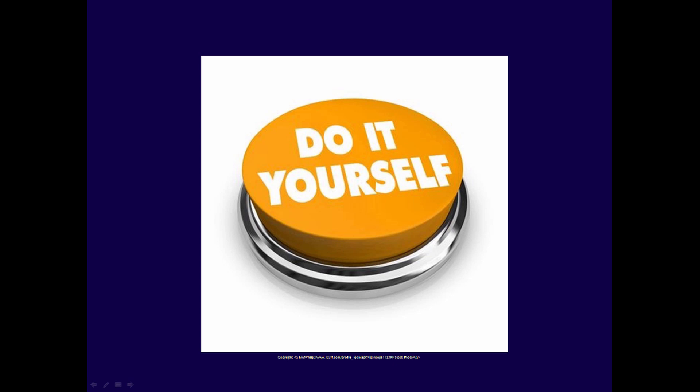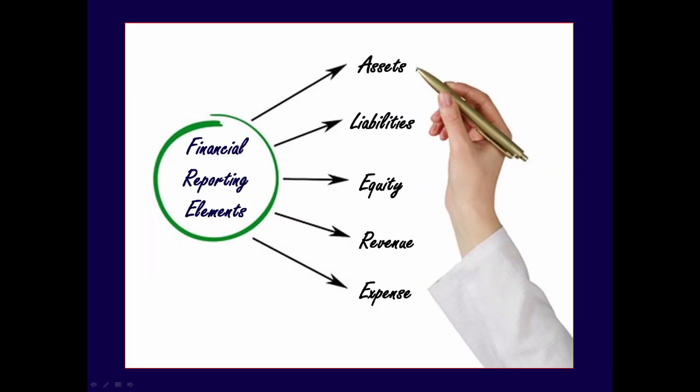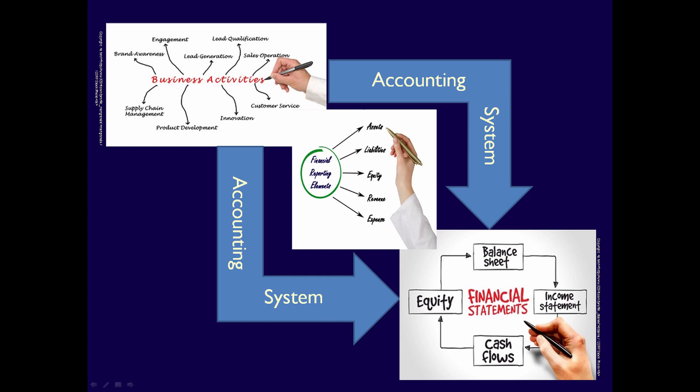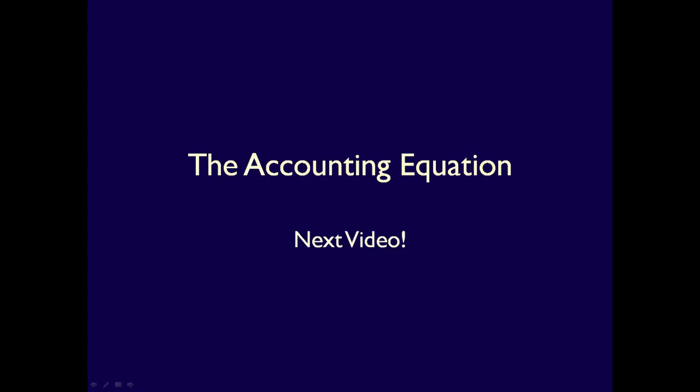We just defined all the elements used in financial reporting. These elements are used when recording business activities, which are grouped so that we can eventually produce financial statements that will be used by external stakeholders to make resource allocation decisions. In the next video, we'll be talking about combining the definitions with the accounting equation.